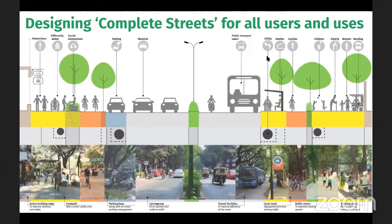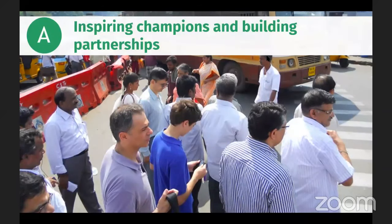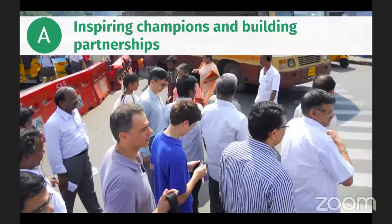Over the last decade, we have followed a three-pronged approach. Number one, we worked towards inspiring champions and building partnerships. We organized walks for decision makers from many important departments that work together for transforming streets. The man in the white striped shirt is the municipal commissioner of Chennai. While these decision makers were extremely well-meaning, since their experiences were within a car, the choices they made were quite different. Taking them for a walk through extremely scary traffic in uncomfortable conditions really transformed many of these leaders into champions who pioneered the non-motorized transport movement in many cities.